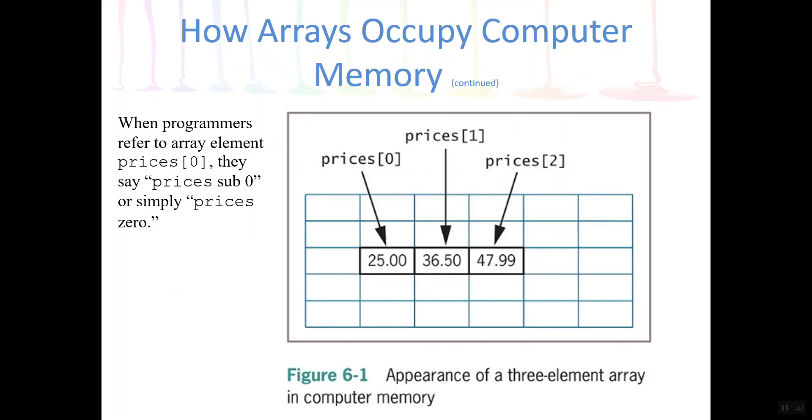So we would instead choose to use an array called prices where it stored all three prices. So you can see in this example that this first element has a value of $25. The second element, which by the way that first element has an index value of 0, it's positioned at position 0. This is index 1 or position 1, and this element's value is 36.50. This element has an index of 2 and a value of $47.90.